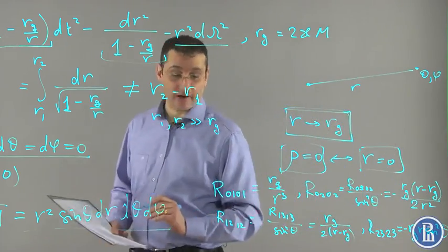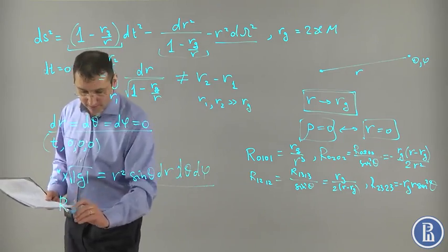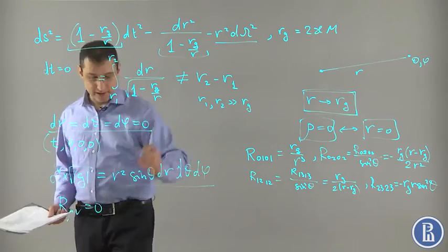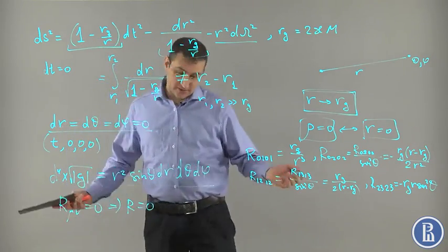But let us look at invariant. For example, simplest invariant would be R. But it is zero because R minu is zero for this metric, then R is zero also. So this is the simplest invariant.